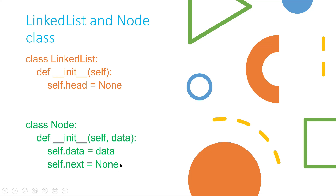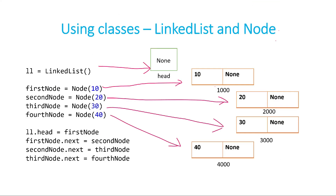So we have created two classes: LinkedList and Node. LinkedList initially just has the variable head, and we'll soon be implementing all the operations in the LinkedList class, because ultimately we need to perform operations on a linked list. So currently we just have head — that is how we have created the two classes LinkedList and Node.